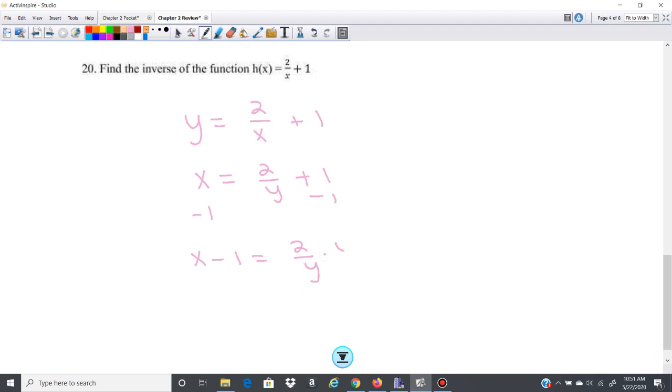Then let's see here. We will multiply by y. We're going to get y equals x minus 1, or sorry, y times x minus 1 equals 2. Don't distribute that because you want y by itself, so just divide out that x minus 1.